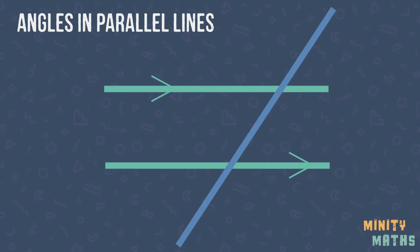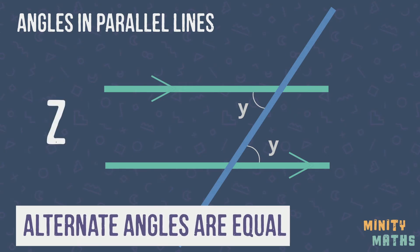Alternate angles are found on alternate sides of the line that crosses the pair of parallel lines. These angles are always equal and are within a Z shape. However, the Z shape doesn't always look like a conventional Z, so these are ones to watch out for. Let's have a look at this example.